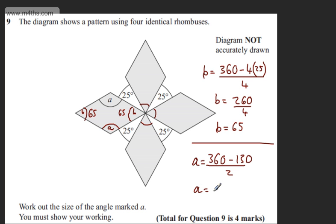So A equals 230 divided by two, which gives us A equals 115 degrees.